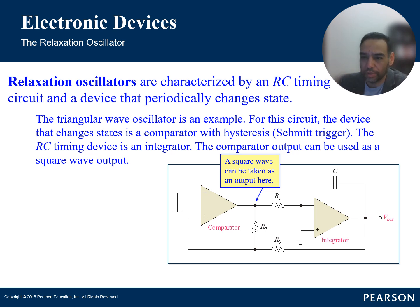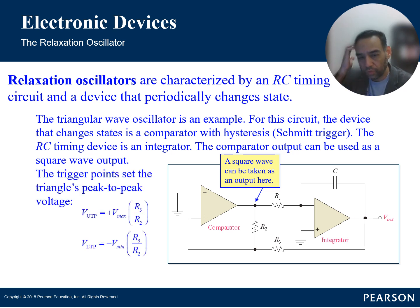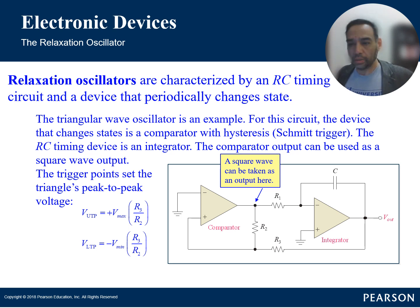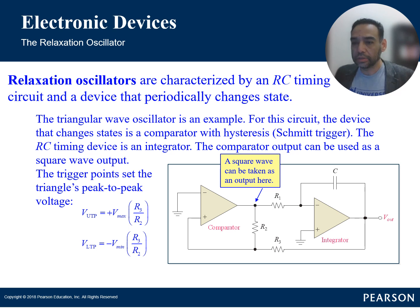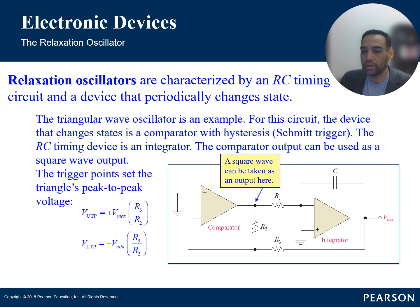The waveform generated depends on the specific circuit configuration and the characteristics of the energy storage element. Common waveforms are square waves, triangle waves, and sawtooth waves. Frequency control for relaxation oscillators is determined by the time constants associated with the charging and discharging of the capacitor and the characteristics of the feedback mechanism. Adjusting the resistor and capacitor values gives the desired oscillation frequency.